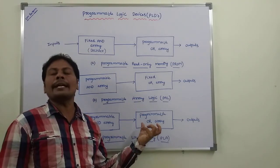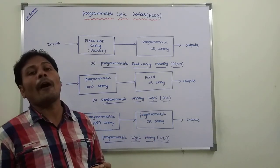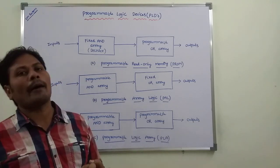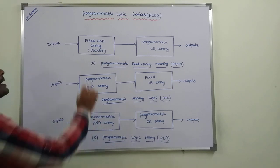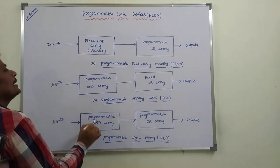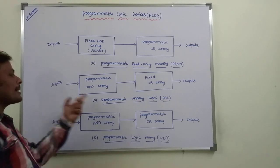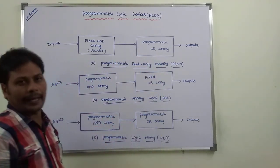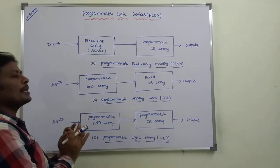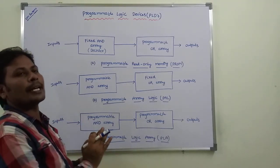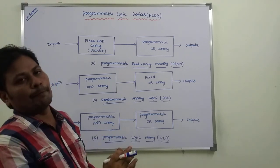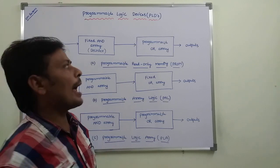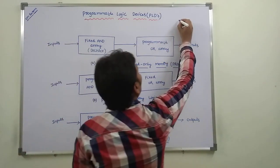Each and every PLD comprises of an AND Array followed by an OR Array. In each and every case, first the AND Array is there. This AND Array may be Fixed or Programmable, but it is always followed by an OR Array. This is the procedure we follow in each and every PLD. Thank you for watching this video. If you like this video, please subscribe to my channel.